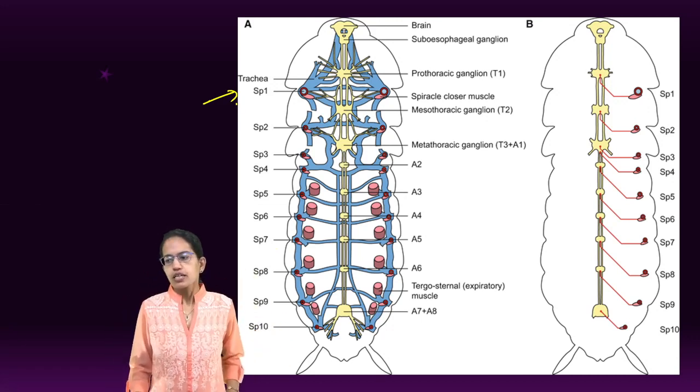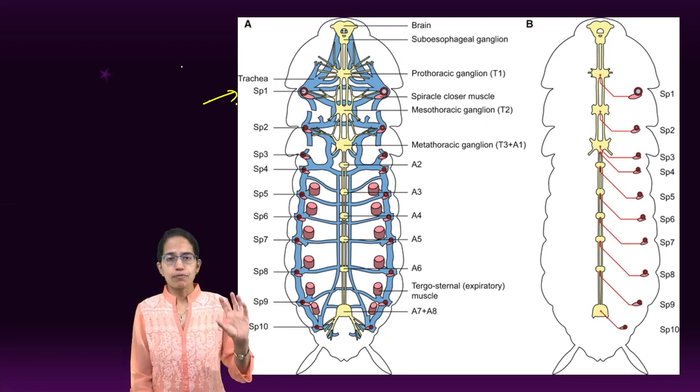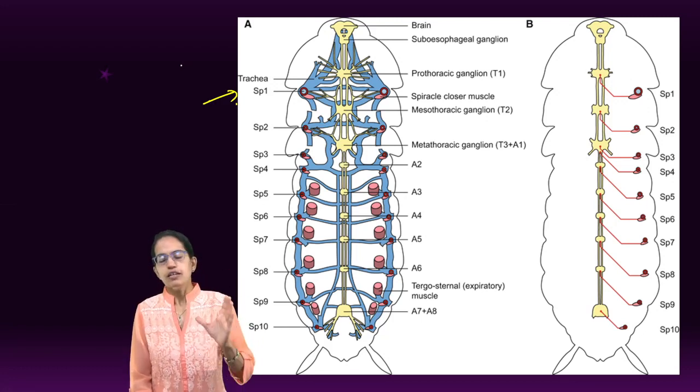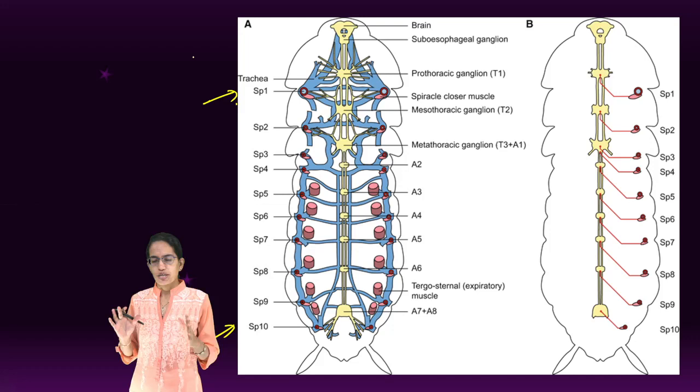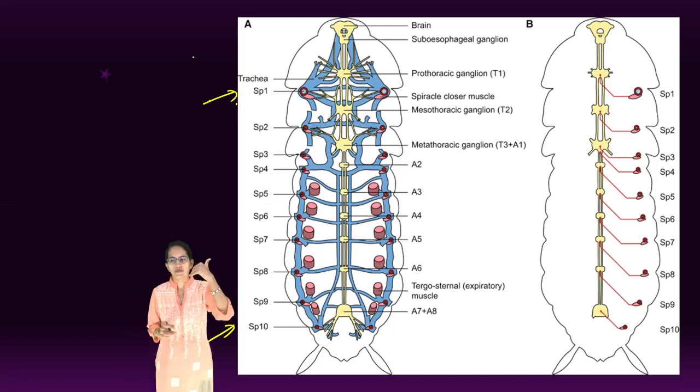The numbering has been given here. These spiracles are guarded by the bristles or the hairs which keep away the dirt within the body or within the tubes of the spiracle.